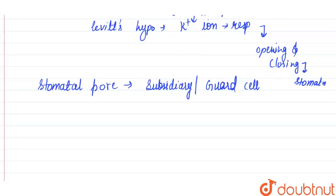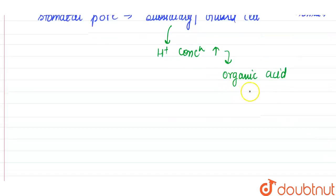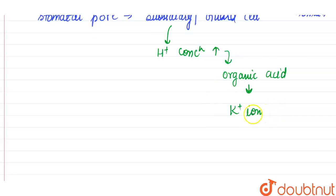When the stomatal pore opens or closes, what happens is that when the concentration of hydrogen ions or proton concentration increases, the formation of organic acid takes place. Then, to balance this concentration, potassium ions enter from the subsidiary cells.